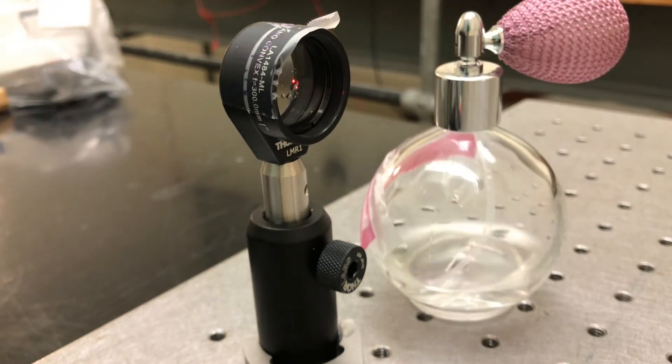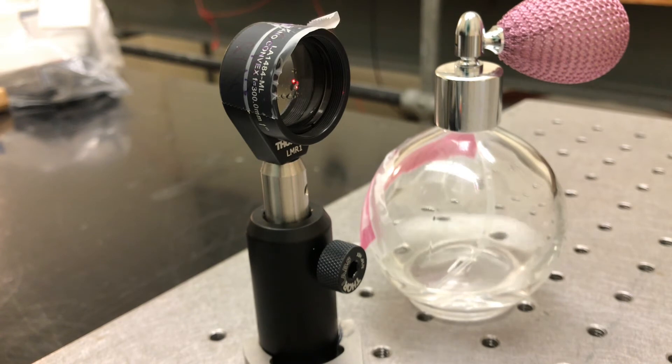What we can do is to take an atomizer, this one's filled just with alcohol, and I'm going to squirt it on the back side of the lens.